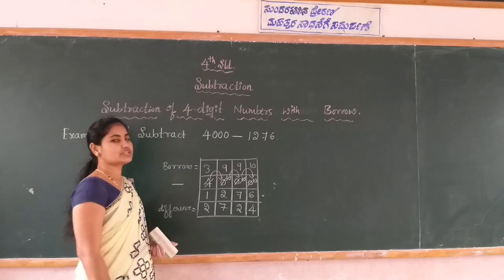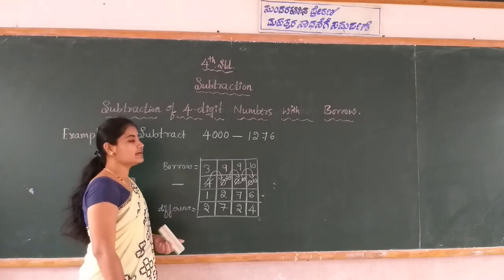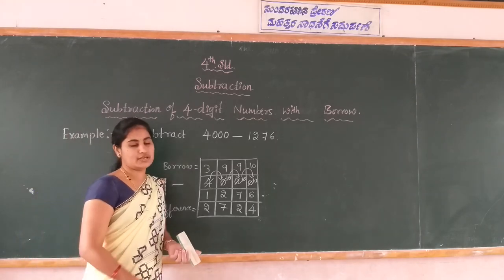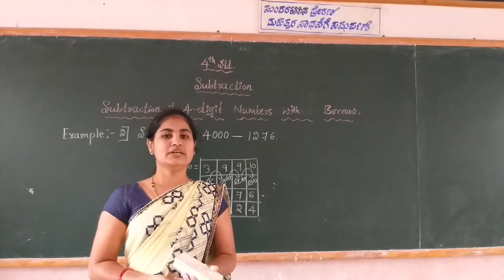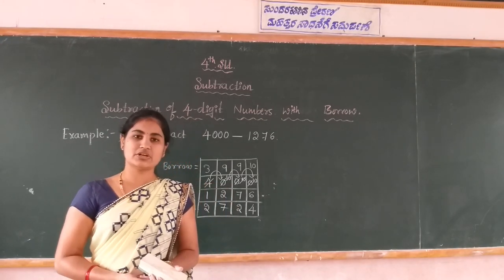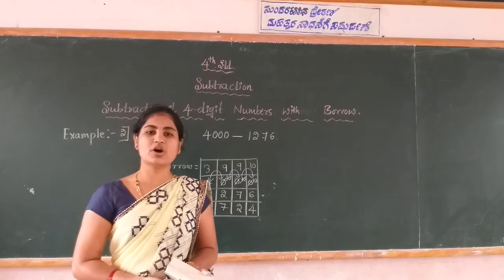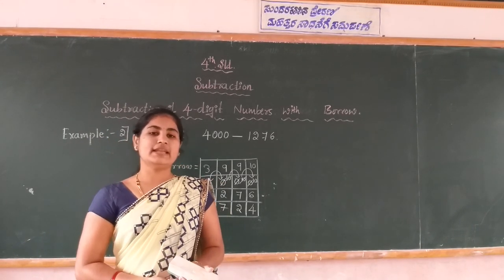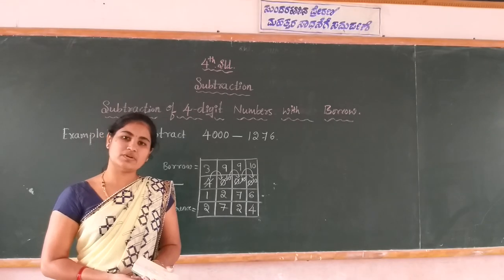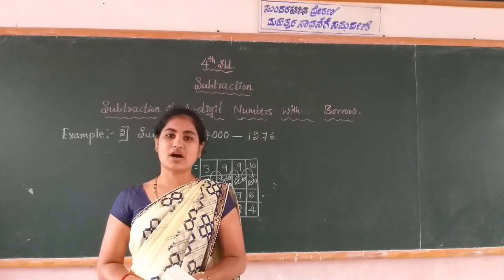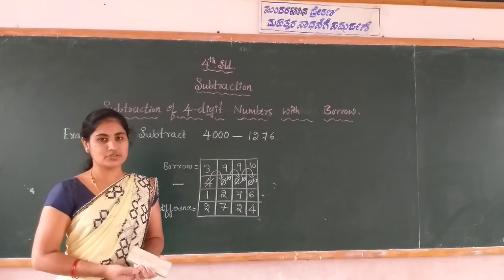This is the subtraction of four digit numbers with borrow. Did you understand how to solve the subtraction of four digit numbers with borrow and also without borrow? In the next class we discuss about the word problems of four digit numbers on the function of subtraction. Thank you.